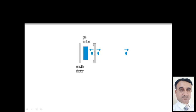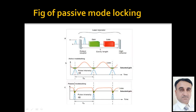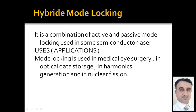The figure shows the device used for passive mode-locking — the saturable absorber is used for passive mode-locking. The last type is hybrid mode-locking, which is a combination of active and passive mode-locking, used in some semiconductor lasers.